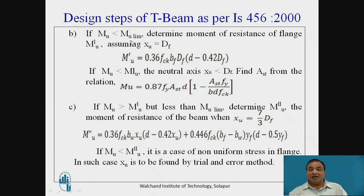If MU is less than MU limit, determine the moment of resistance of the flange that is MU1 or MU' assuming XU is equal to DF. I assume XU is equal to DF and I will first of all find out what is MU'. So MU' is equal to that means if it is within compression flange. So in that particular case it is 0.36 FCK BF into DF into D minus 0.42 DF. That is this is lever arm.